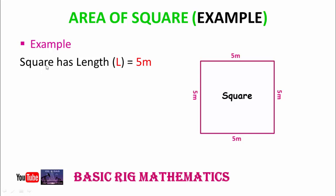As you see in the picture, the square has length L equal to five meters. What will be its area? As we already know, area of square is equal to L squared.